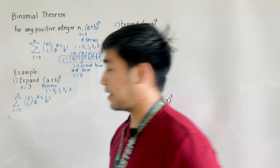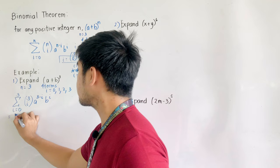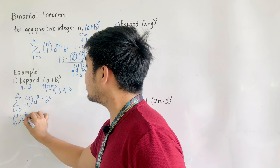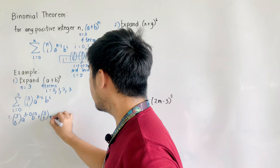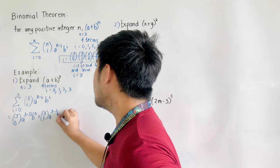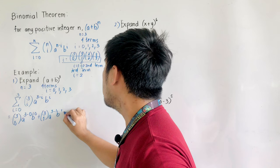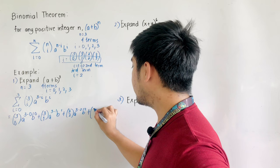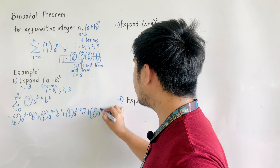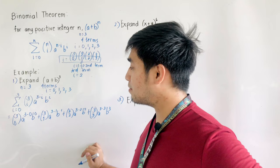Expanding the summation notation, this becomes: C(3,0) · a^(3−0) · b^0, plus C(3,1) · a^(3−1) · b^1, plus C(3,2) · a^(3−2) · b^2, plus C(3,3) · a^(3−3) · b^3. So we have four terms in total.